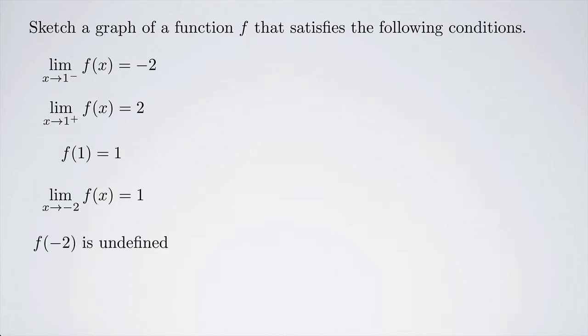Sketch a graph of a function f that satisfies the following conditions. The limit as x approaches 1 from the left of f of x is negative 2. The limit as x approaches 1 from the right of f of x is positive 2. f of 1 is 1. The limit as x approaches negative 2 of f of x is 1. And f of negative 2 is undefined.